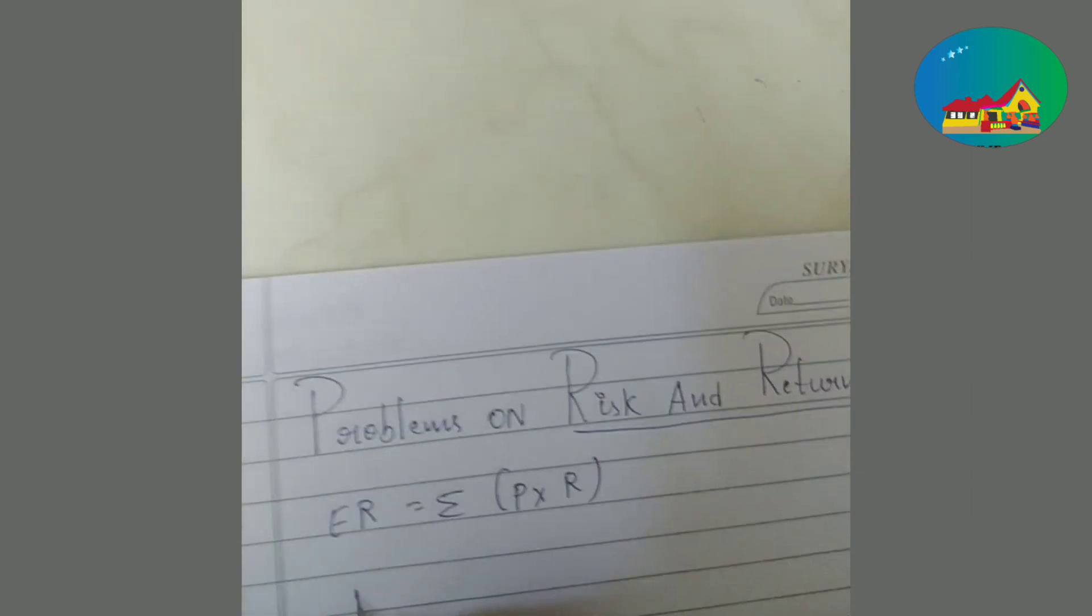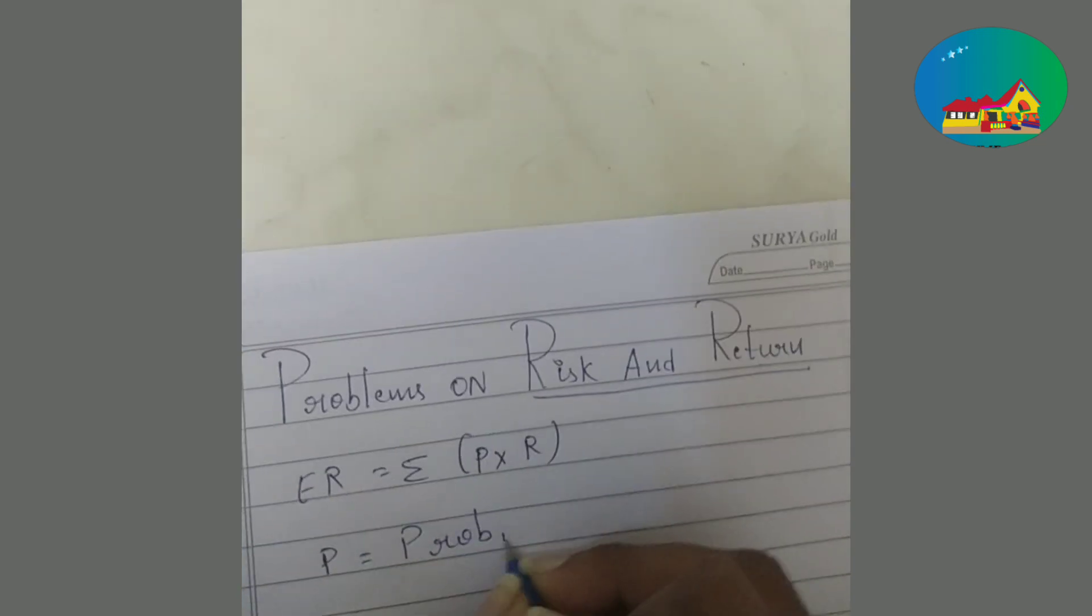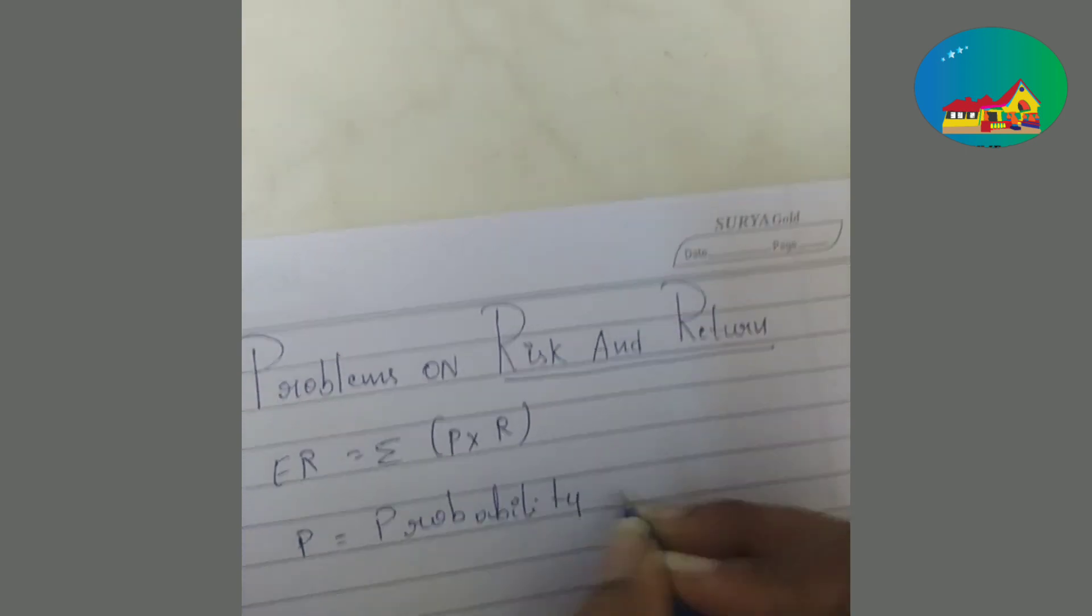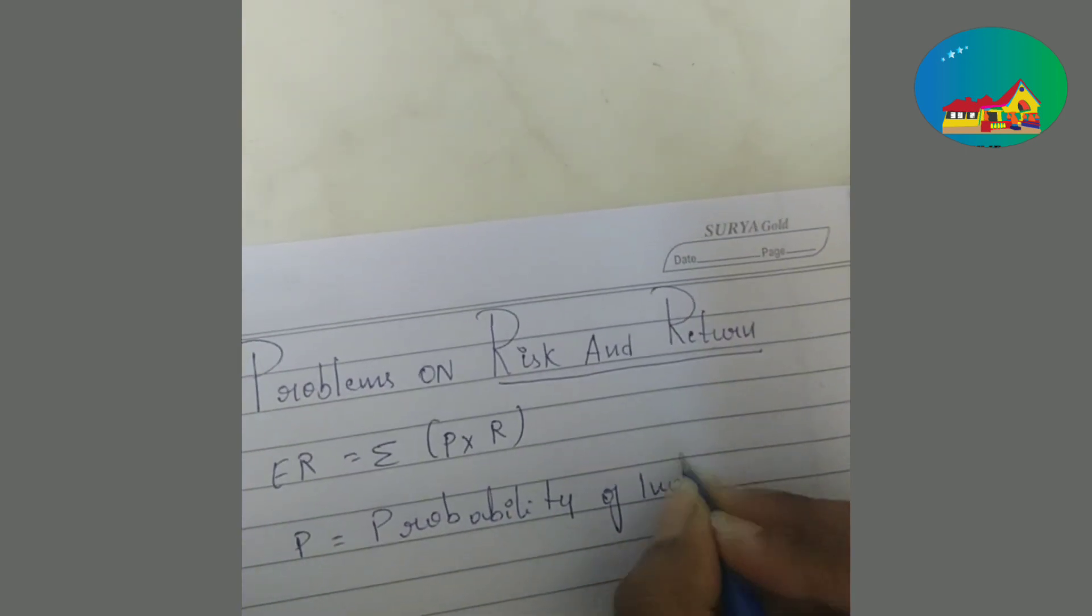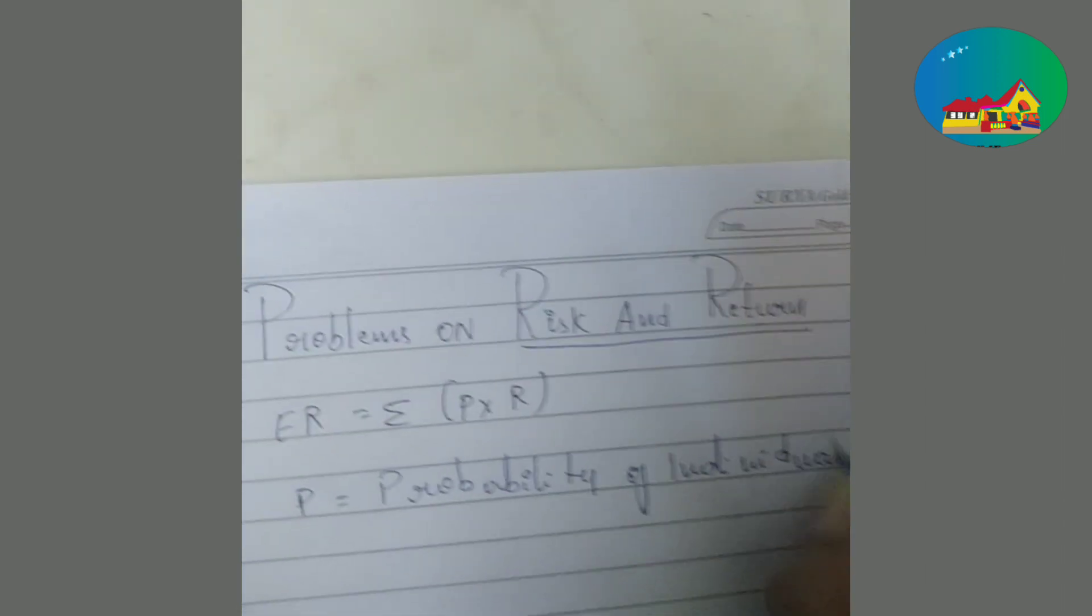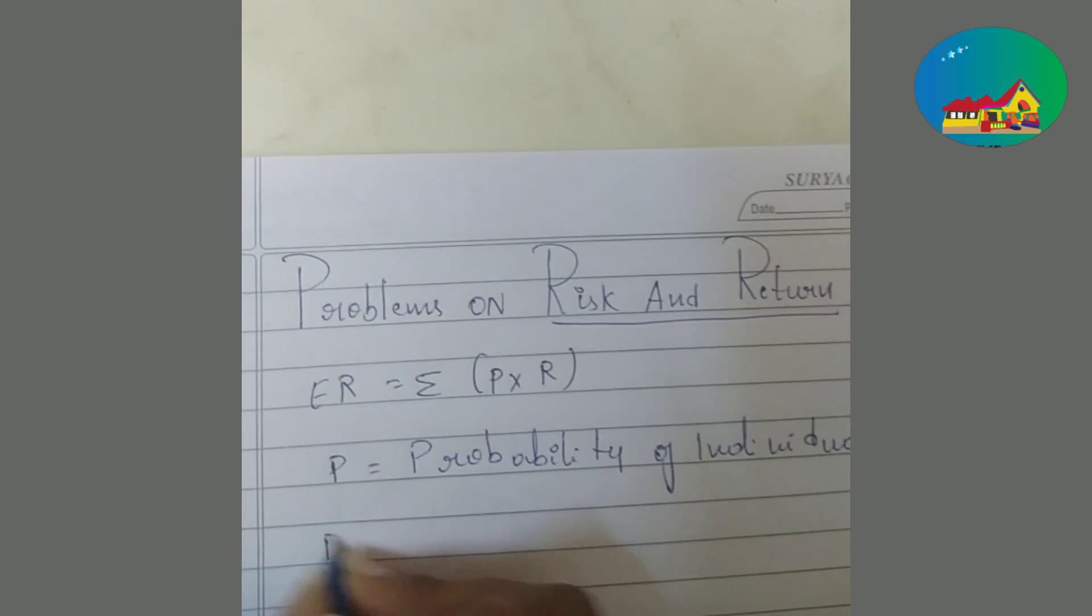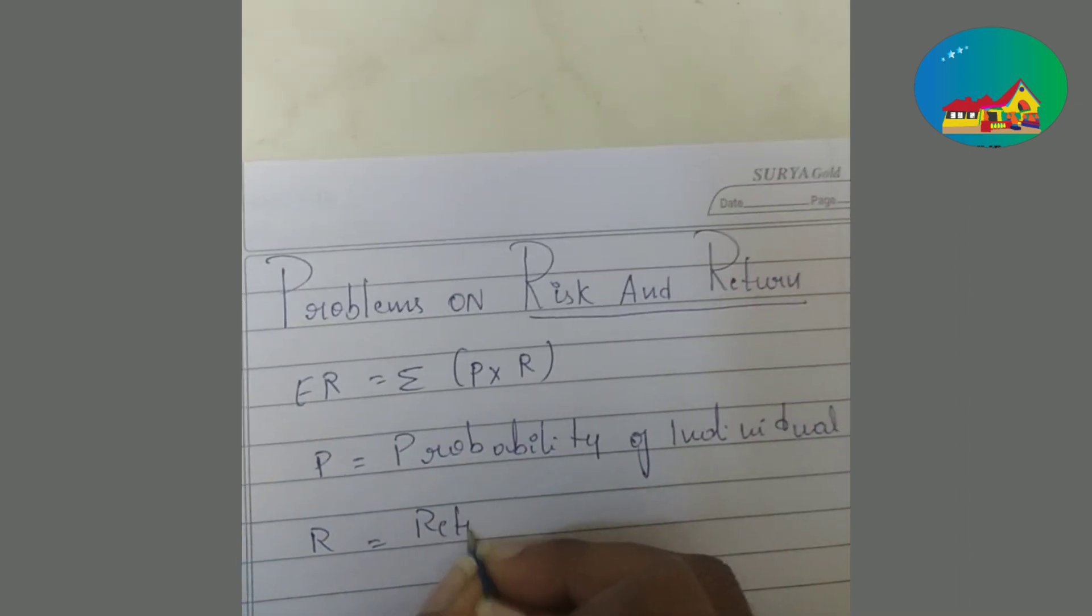P indicates probability of individual stock. R is return on individual stock.